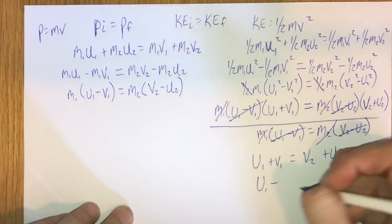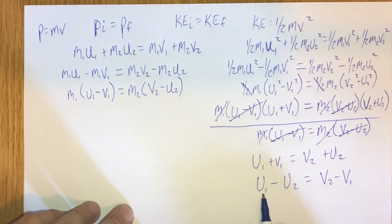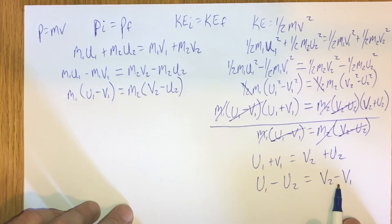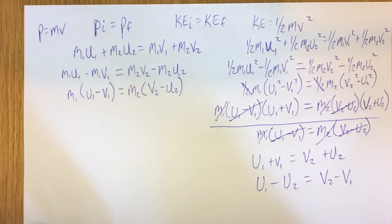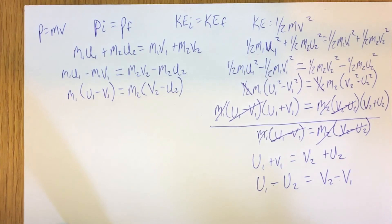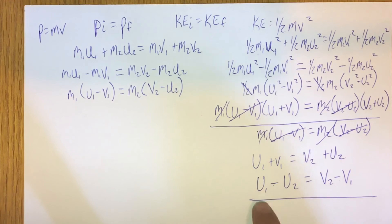Combining initial velocities and final velocities together, this is a mathematical way of saying that the relative speed of approach — how fast the two objects see each other initially — equals the relative speed of separation after the collision. To calculate relative speed: when objects move in the same direction, we subtract their speeds; when objects move in opposite directions, we add their speeds. That idea is captured with this mathematical statement.